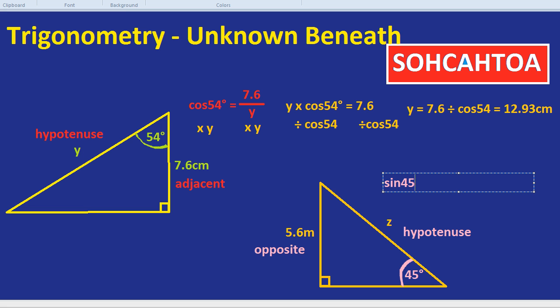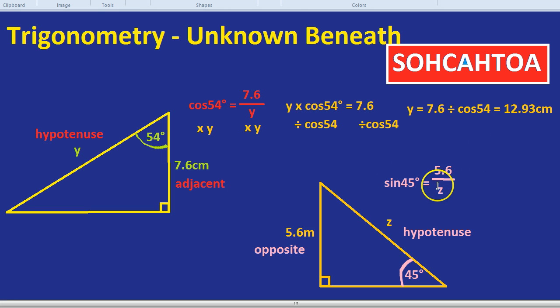So we have sine of the angle, so sine of 45, but not just sine of 45. Sine of 45 equals the opposite divided by hypotenuse. Don't forget that other side of the equation is quite easy just to type in sine of 45 and then get a bit lost. So we need to remember that equals the opposite, which is 5.6 divided by the hypotenuse, which we don't know. Just call it Z.